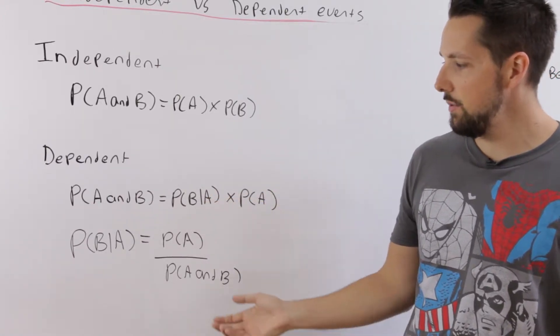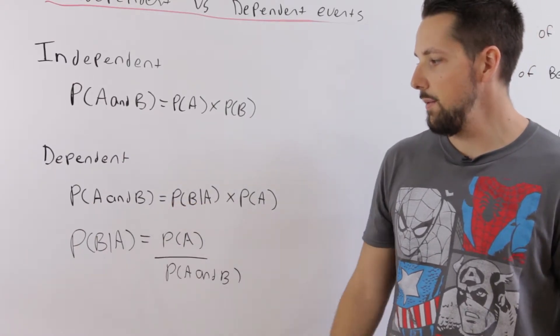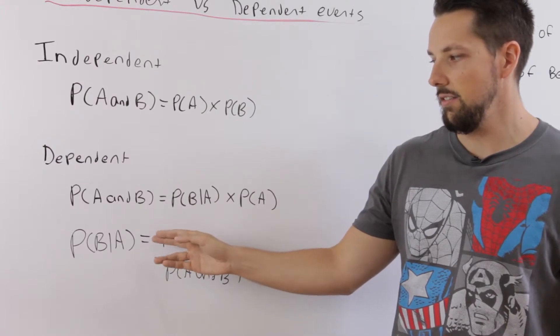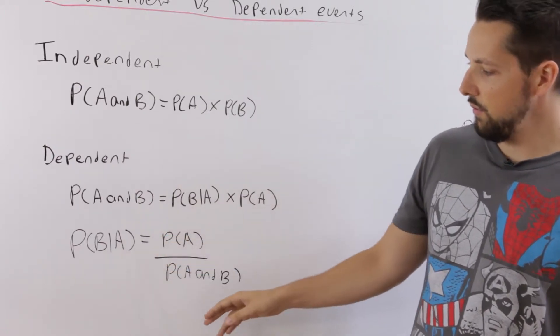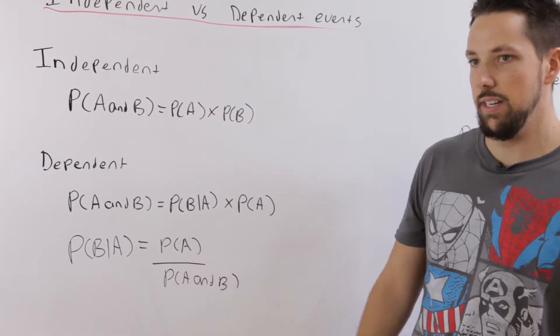Now using algebra we can rearrange this formula to solve for different things. If you're looking for the probability that B occurs given that A has already occurred, you divide the probability of A and B occurring by the probability of A.